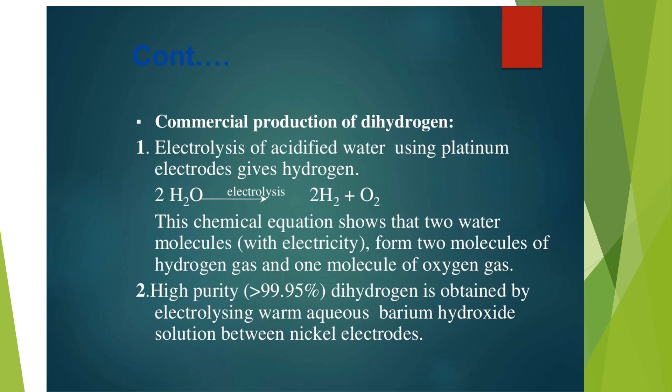Commercial production of hydrogen: Electrolysis of acidified water using platinum electrodes gives hydrogen. On electrolysis, water produces hydrogen and oxygen gases. This chemical equation shows that two water molecules with electricity form two molecules of hydrogen gas and one molecule of oxygen gas.